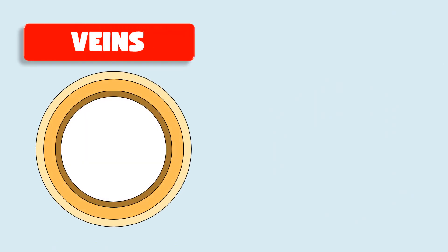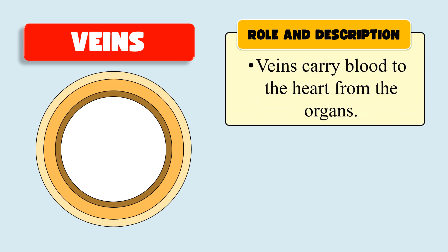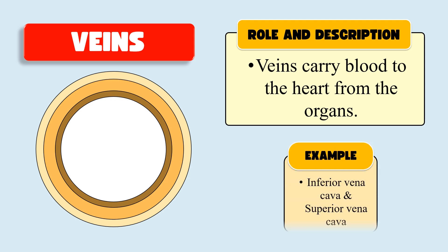The next type of blood vessel are veins. These veins carry the blood to the heart from the organs, and they generally carry deoxygenated blood. Simply put, blood from the organs is taken to the heart by these veins. Examples of these veins include the inferior vena cava, superior vena cava, etc.